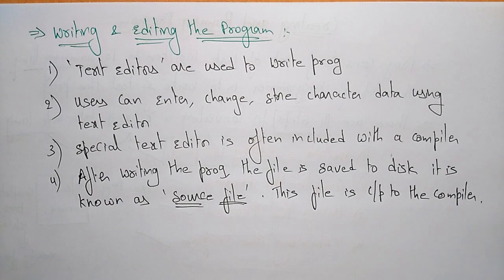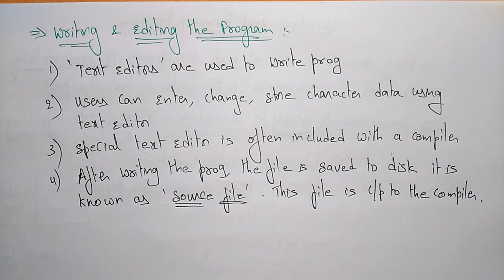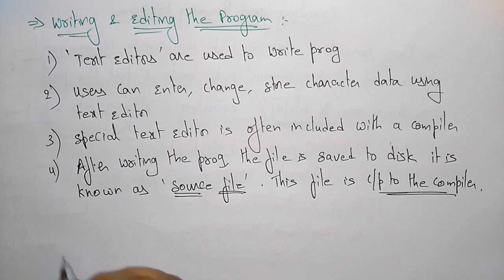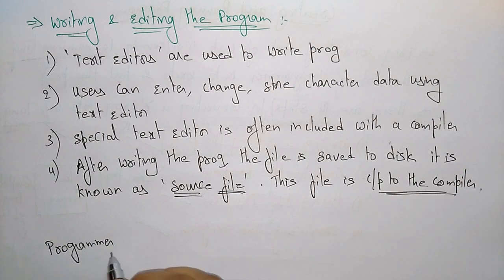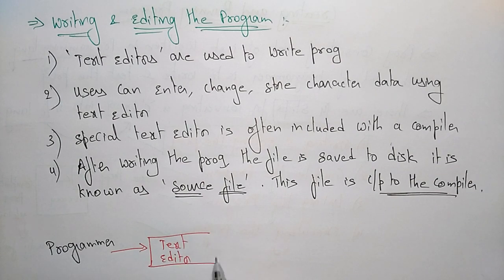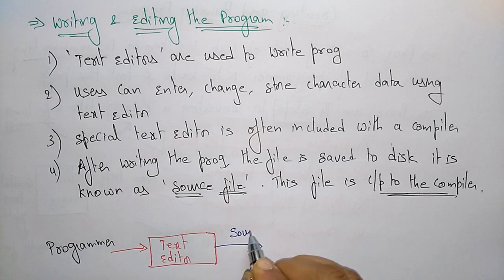I hope you understand how to write and save the program and where to save it. We save the program because after writing it must be compiled, and before compiling, the program must be written and provided as input to the compiler. The programmer enters the program in the text editor, and that program is saved as a source file.